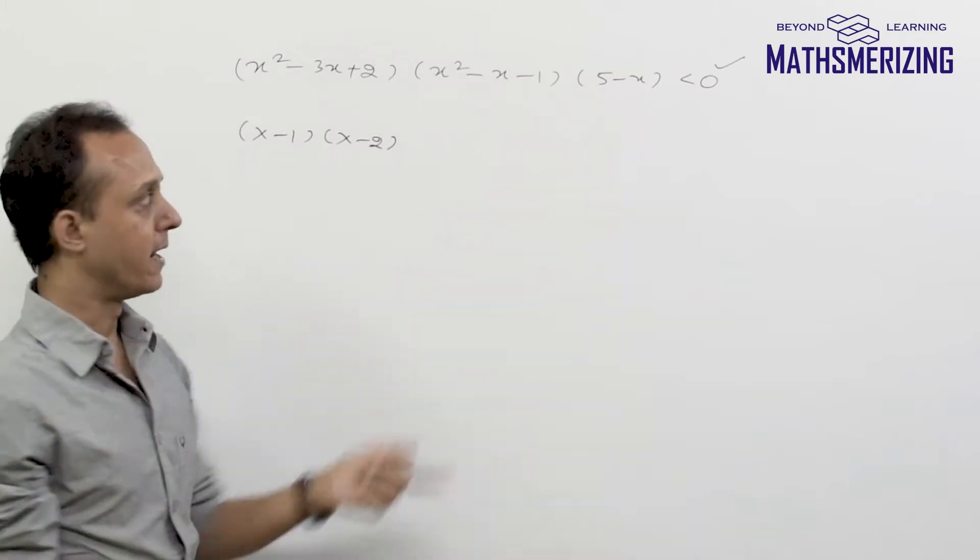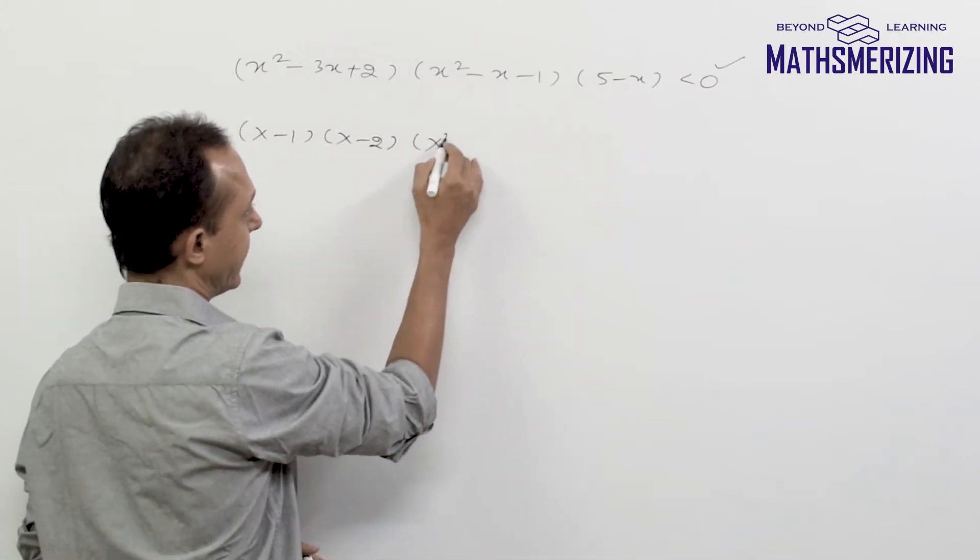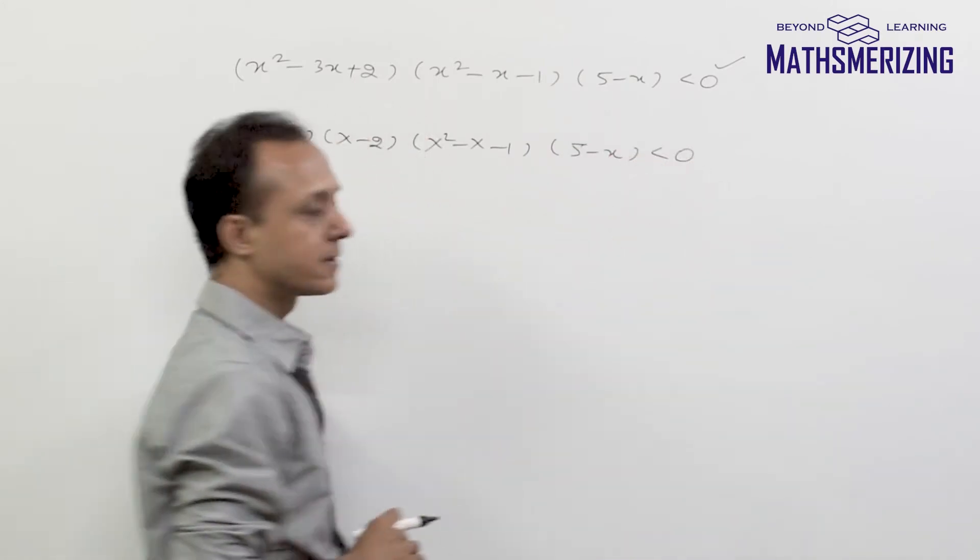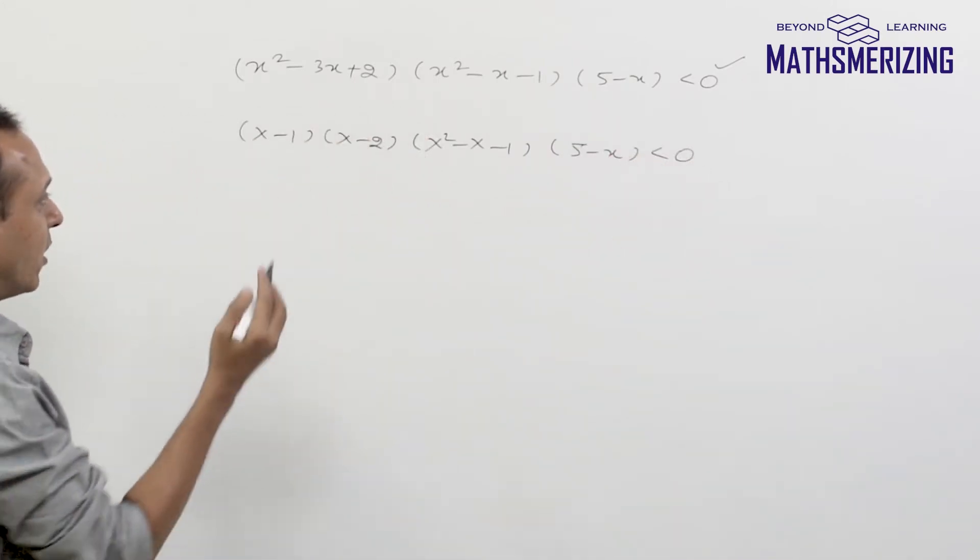I cannot factorize the second one, x squared minus x minus 1, so I'll simply write it as x squared minus x minus 1. And then this is 5 minus x, and this is less than 0. Now I'll try and find roots of this expression.